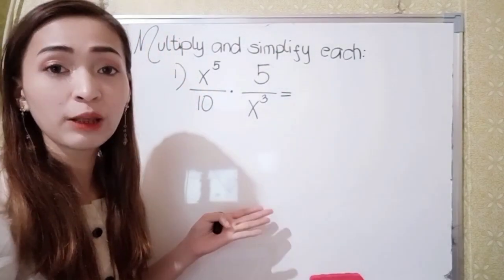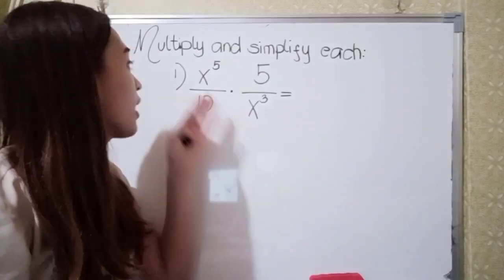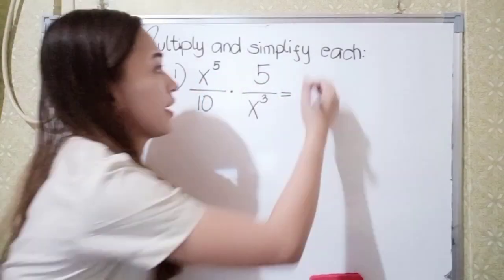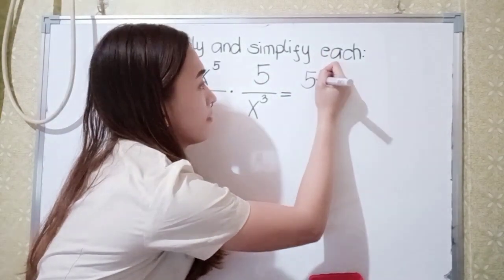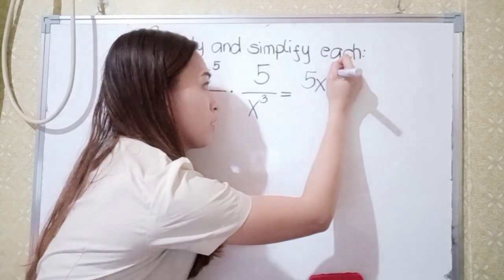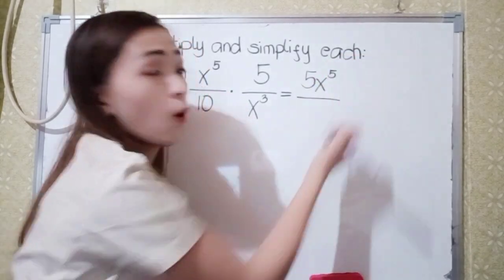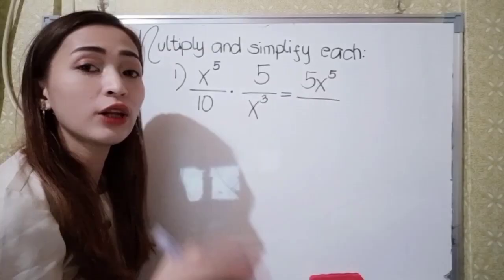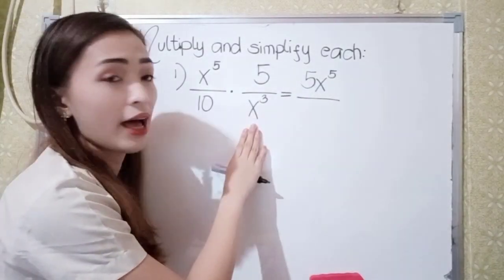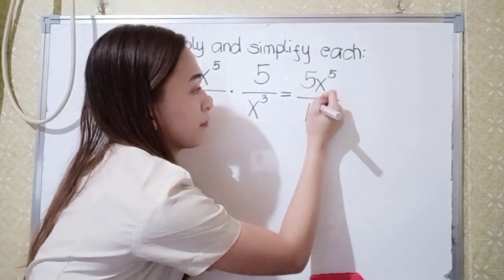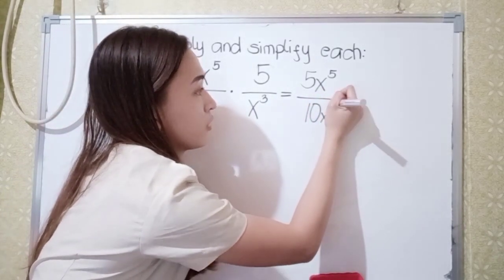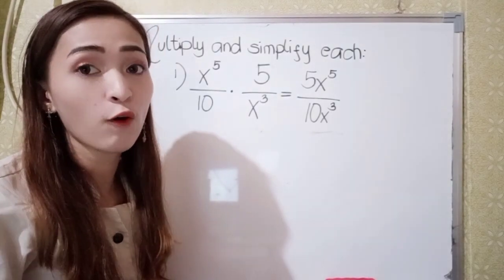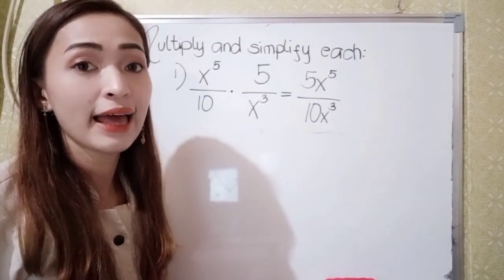So just multiply numerator to numerator: x raised to the 5th power times 5 is 5x raised to the 5th power. Next is to multiply denominator to denominator, so 10 times x cubed will become 10x cubed.